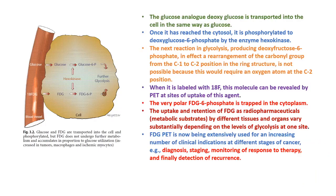Blood transports both glucose and FDG. Glucose is taken up by cells via glucose transporters, and once inside, it is phosphorylated by the enzyme hexokinase to form glucose-6-phosphate, which then enters the glycolytic pathway to produce energy. Similarly, FDG is transported into the cell by glucose transporters, and once inside, a phosphate group is transferred to FDG by hexokinase, forming FDG-6-phosphate.